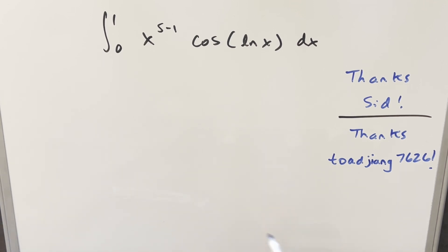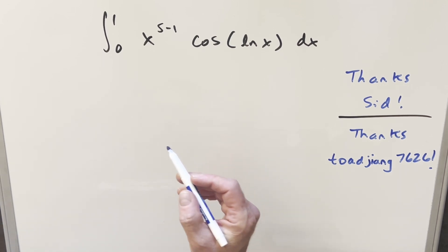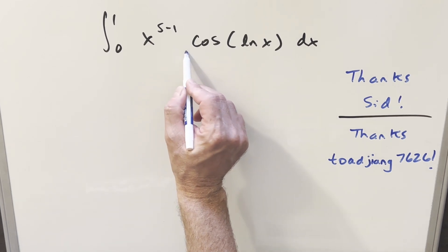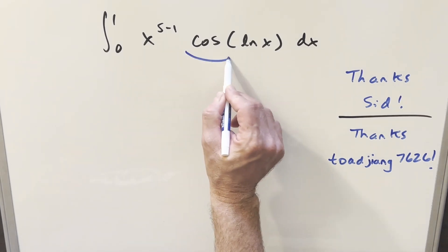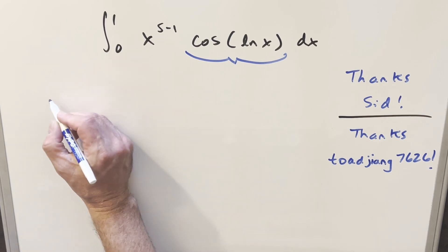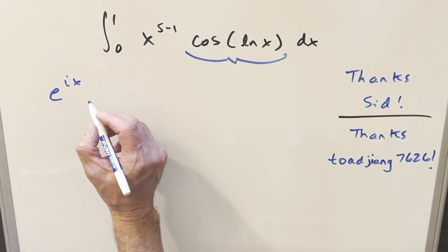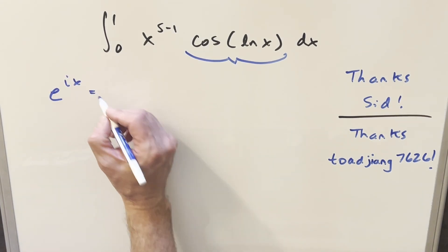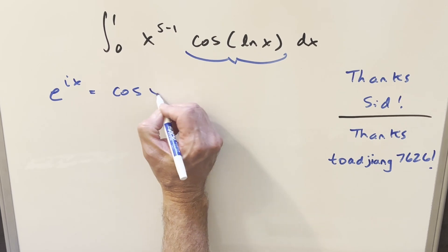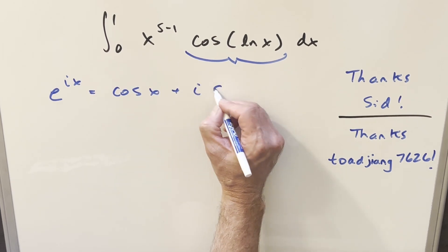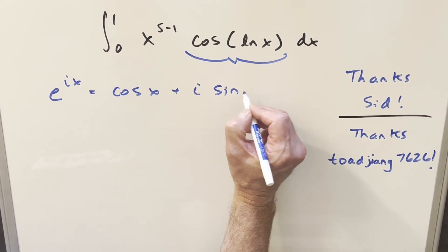The idea for this is we want to use the complex method, and especially for cosine we can rewrite it using Euler's formula. Starting with Euler's formula, e to the ix equals cosine x plus i sine x.